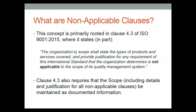So let's begin with what are non-applicable clauses. The phrase is rooted primarily in Section 4.3 of ISO 9001-2015. It states that your scope — what you are certified for, what you've built your quality management system around — needs to be very explicit about the products and services, and it needs to provide justification for any requirement of the standard that the organization determines to be not applicable. Section 4.3 requires this to be maintained as documented information, with non-applicable clauses established and justified in writing.